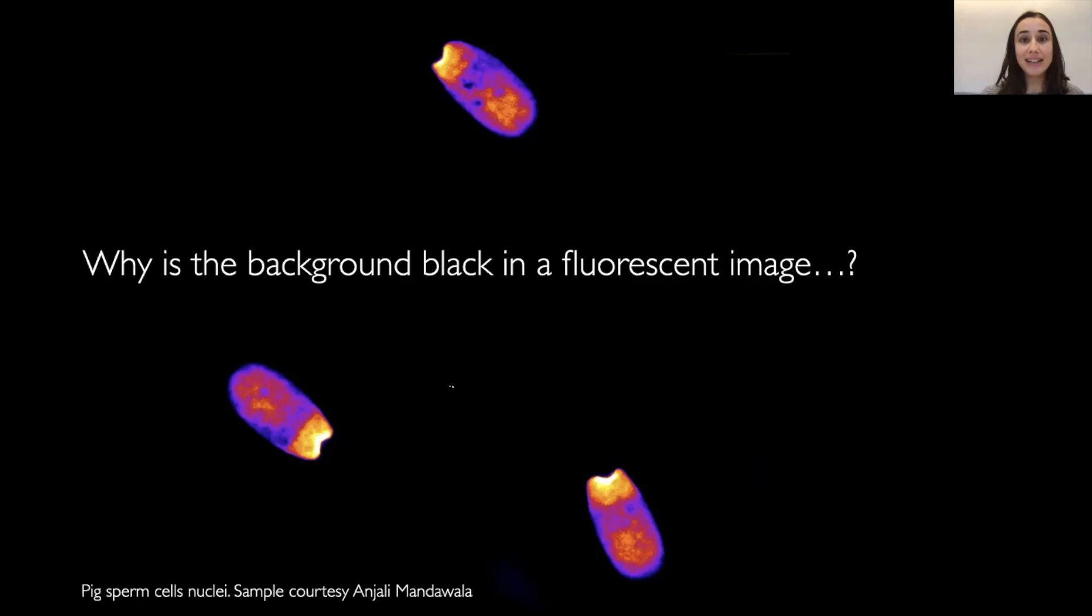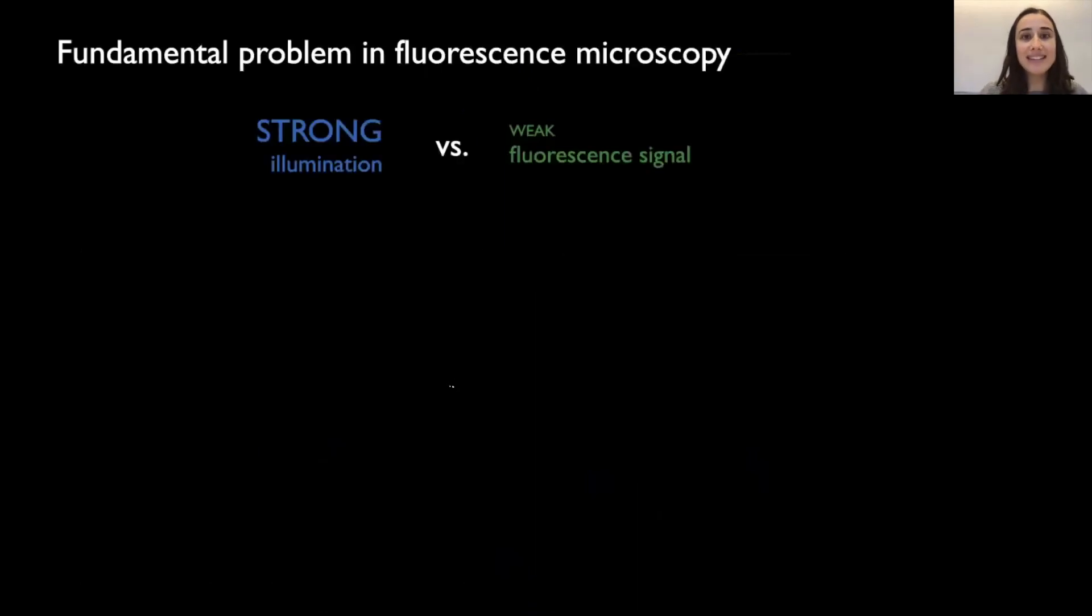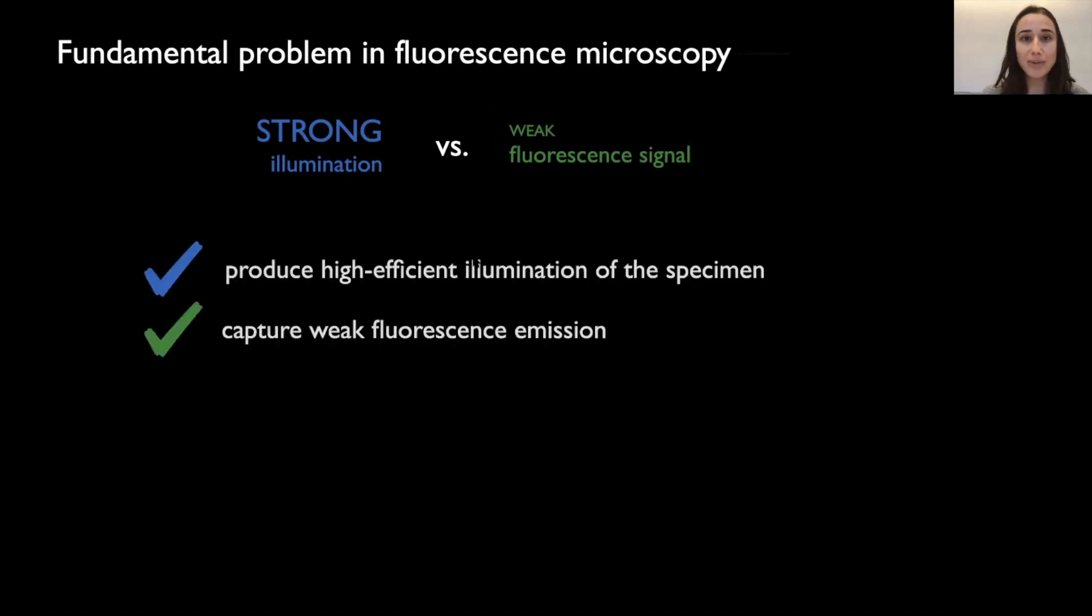So the final image does not have any of that incoming light and we are just looking at the fluorescence. So basically, we need a way to separate the two light paths, the excitation from the emission. And that comes now to the fundamental problem that all the fluorescent microscopes need to deal with, which is a strong illumination compared to a weak fluorescent signal. Because the fluorescent signal is quite weak and lower orders of magnitude compared to the illumination.